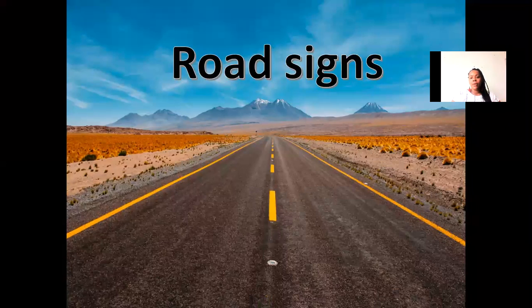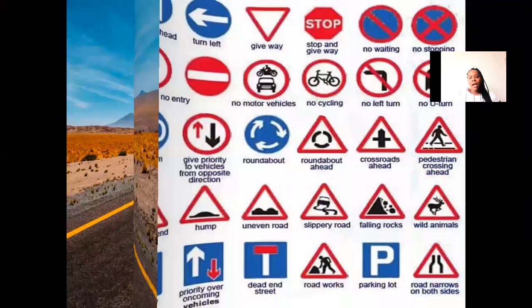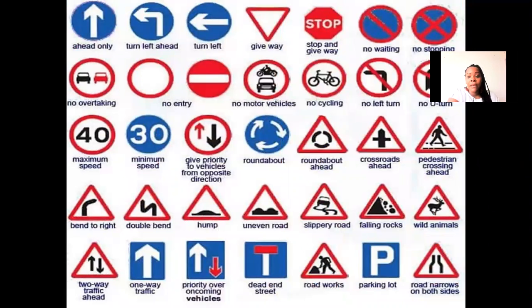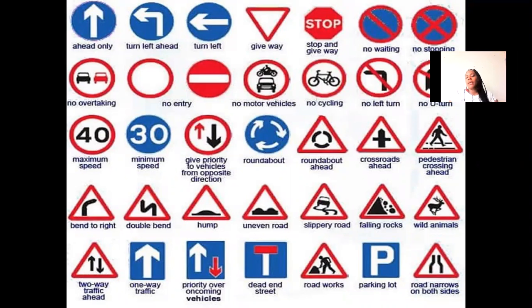If you remember, we are talking about road signs. Okay, there are different road signs. For example, we have no left turn, crossroad ahead, maximum speed, two-way traffic ahead, no waiting, no stop, no overtaking, no entry, no motorcycle, no cycling, wild animals, and more. Hay demasiadas señales tanto del camino como del tránsito que sirven para ayudarnos a dirigirnos de una manera correcta en las calles o en las vías donde nosotros nos dirijamos.